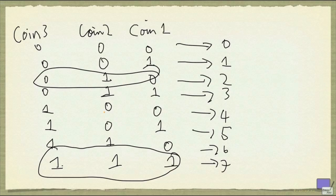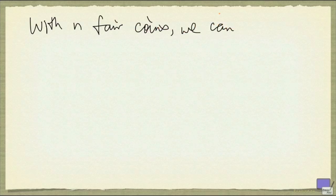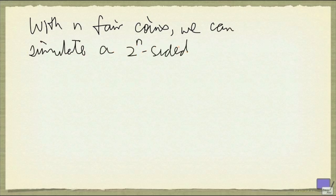In other words, if I have k coins, then I will be able to represent 2 to the k values in exactly one way. So what this means is, if we have n fair coins, we can simulate a 2 to the n-sided fair die.